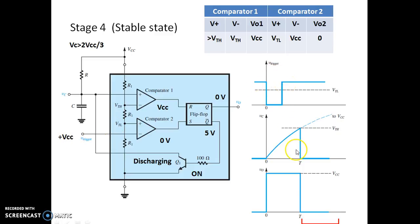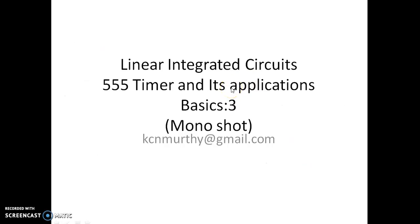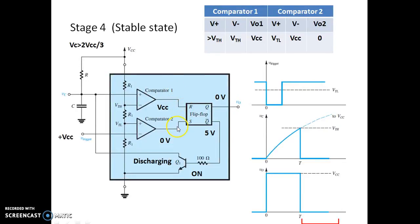As indicated by the red strip, we are operating in this region. The capacitor voltage is just above VTH and the trigger voltage is more than VTL — close to VCC. The trigger is at +VCC and the capacitor voltage is more than VTH, so V+ is more than V−, making the first comparator output VCC. The V+ of the second comparator is VTL while V− is VCC, making the second comparator output 0.